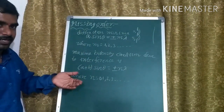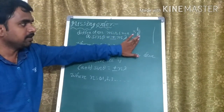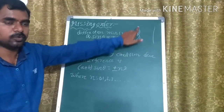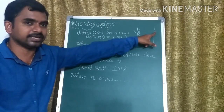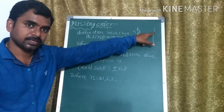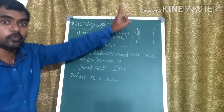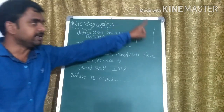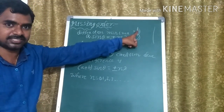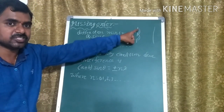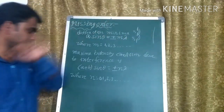Once again I am recalling you: in the Fraunhofer double slit experiment, in the absence of one slit, we can get due to the second slit the diffraction pattern. If both the slits are present, we will get the diffraction pattern due to the secondary wavelengths diffracted at the slits, and the interference pattern due to the superposition of the two waves.